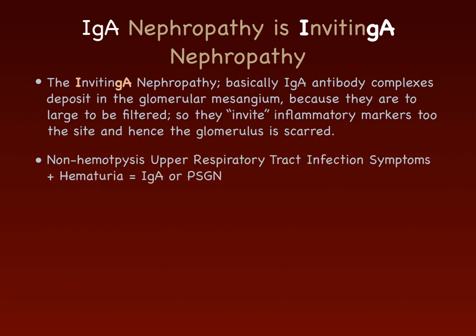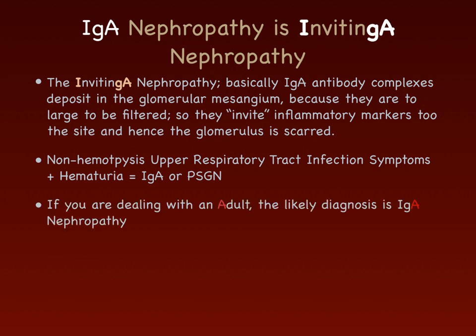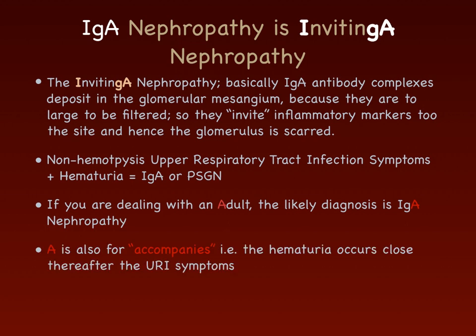The differential diagnosis for upper respiratory tract infection symptoms plus hematuria without hemoptysis includes IgA nephropathy and PSGN (post-streptococcal glomerulonephritis). If the patient is an adult, the likely diagnosis is IgA nephropathy. A stands for 'accompanies' — in IgA nephropathy, the onset of hematuria occurs close to, or at the same time as, the upper respiratory tract infection symptoms, usually only a couple of days apart.